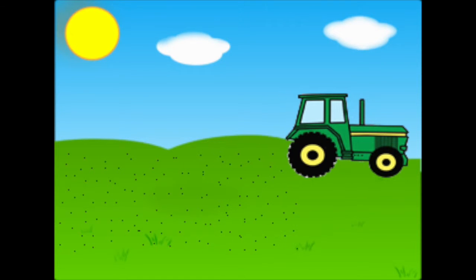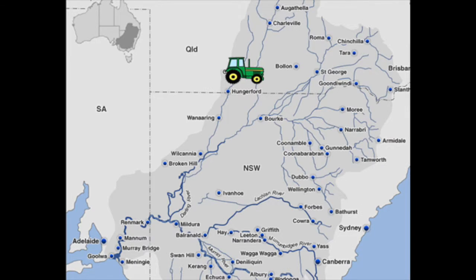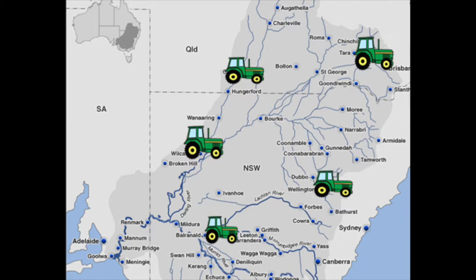This is a particularly large issue for the Murray-Darling Basin as there is a lot of farmland surrounding the catchment. This severely increases the risk of the nutrients from the fertilisers leaching into the basin.